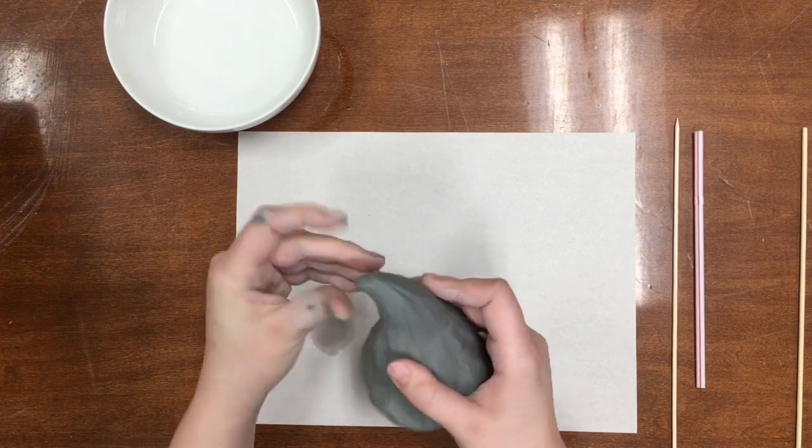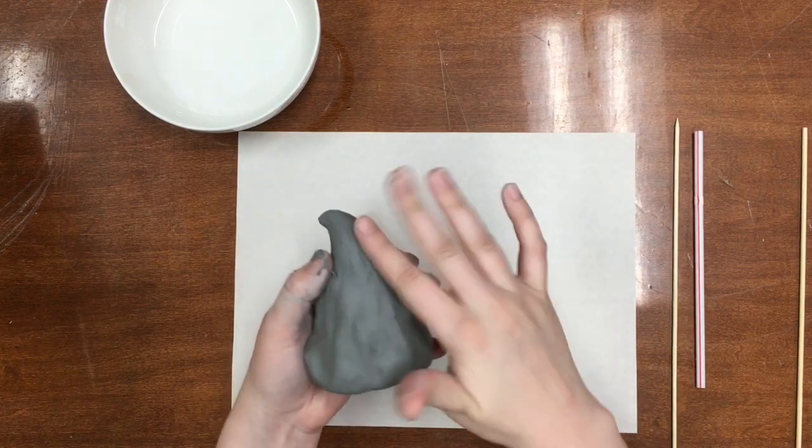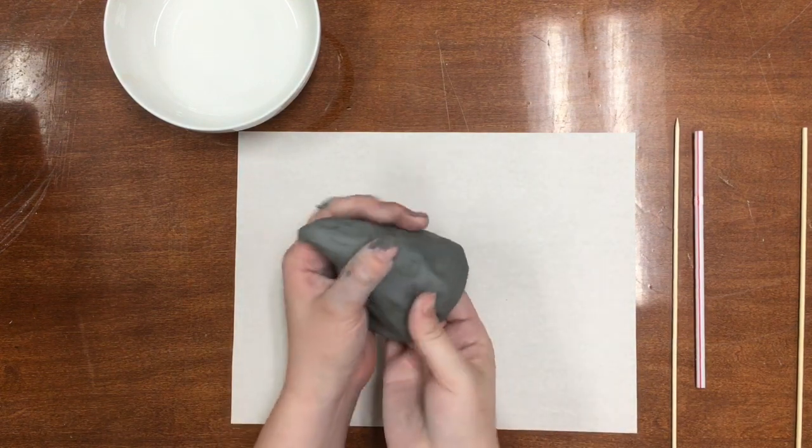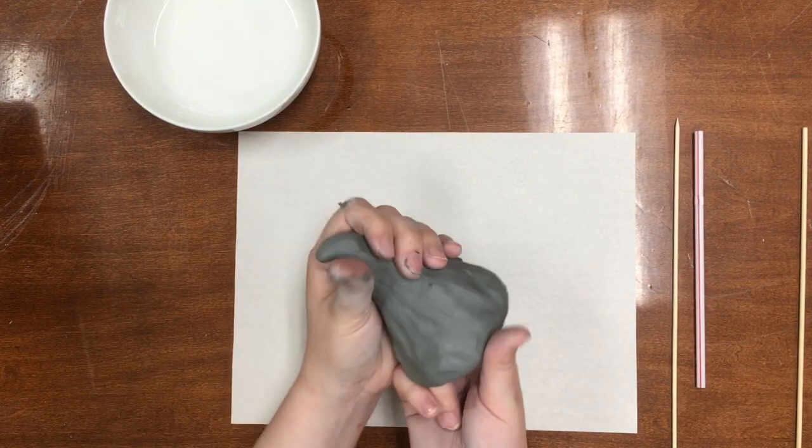I bent mine over just a little bit to the side because I want my little ghost head to kind of be leaning. And now for the super fun part, after you get this cone shape, which if you didn't get it as quick as I did, don't stress.